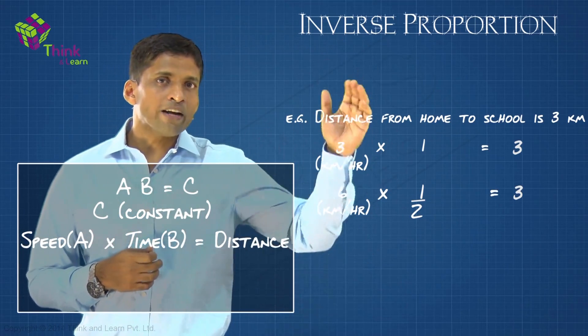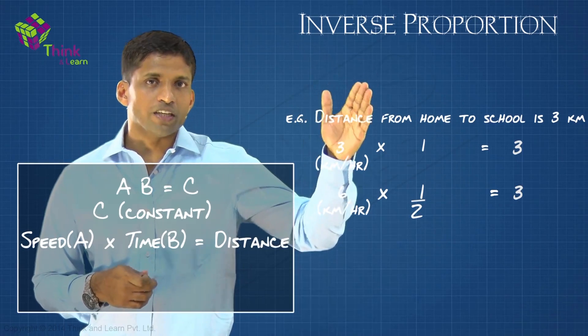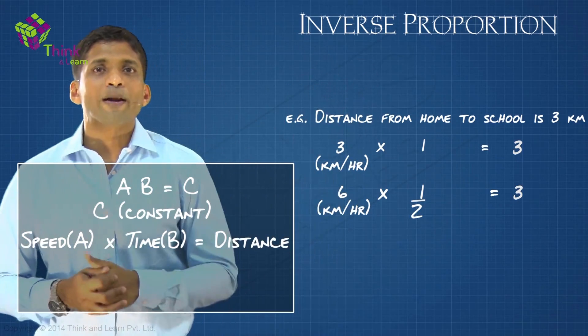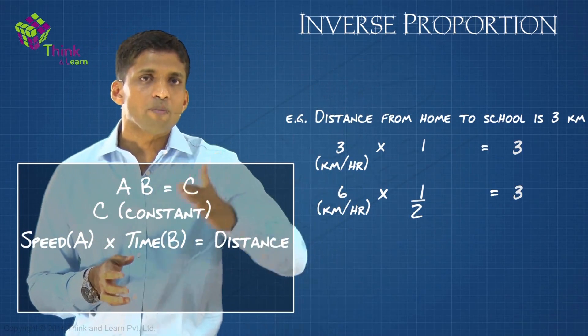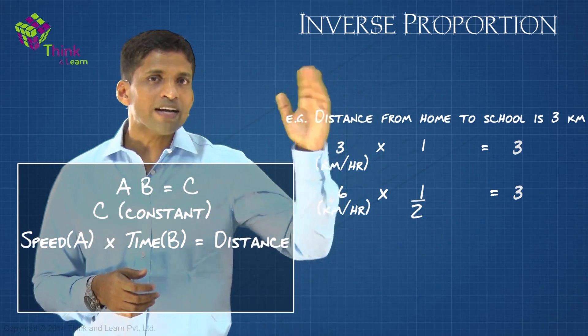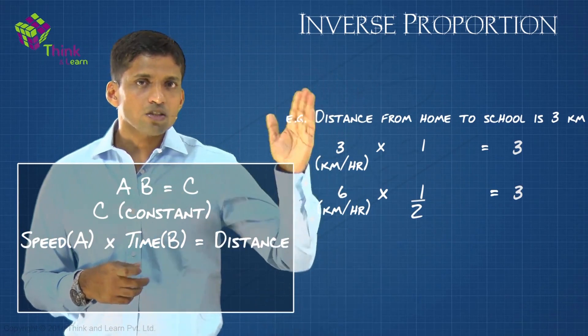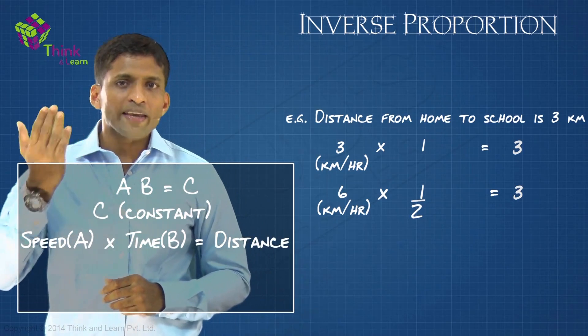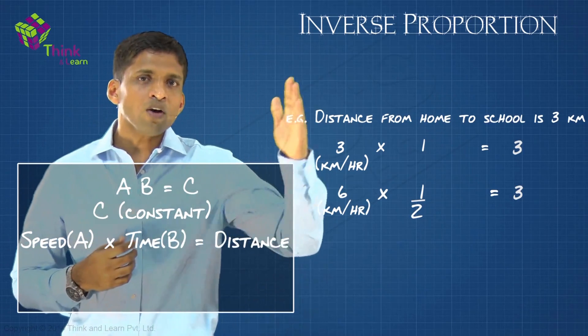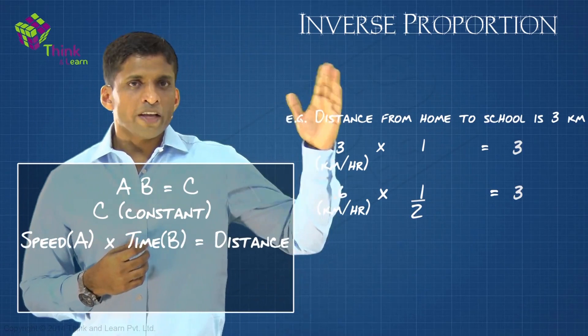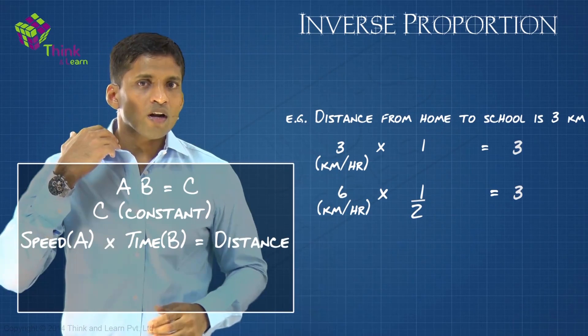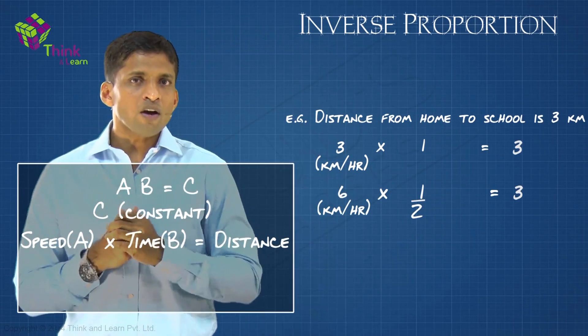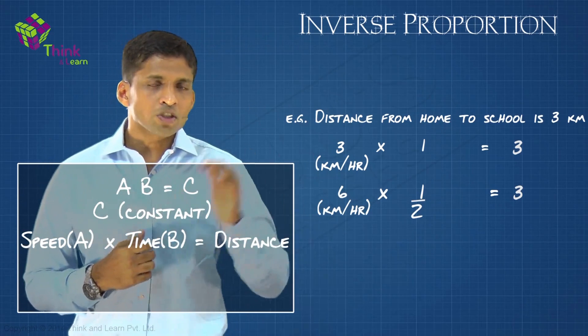The right hand side is constant. I told you to keep the distance constant because that's a practical scenario here, distance between your home and school. We assume that's 3, so that's fixed. If you are running at 6 kilometers per hour, you will reach school in half an hour.